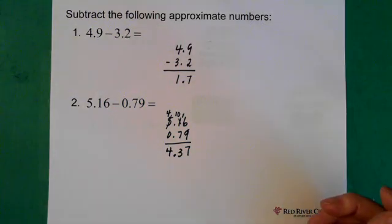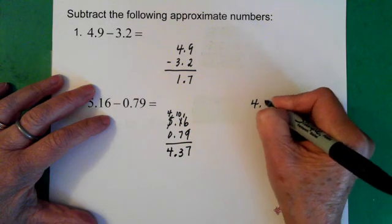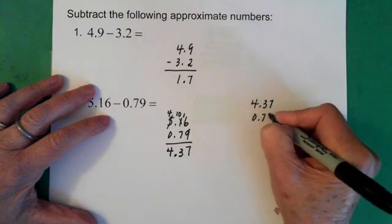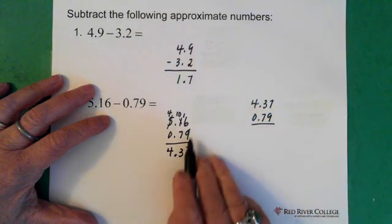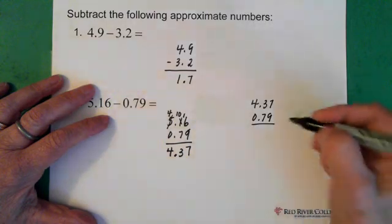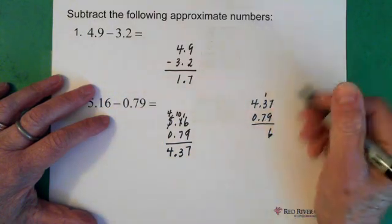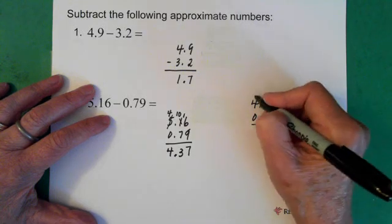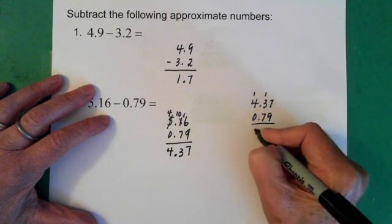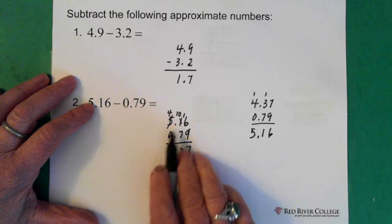And when you've done the question and if you're thinking, I don't know if that's right or not, you can always just do this: add it together. So the 4.37 plus that number and see if it ends up being 5.16. So 9 and 7 is 16, 6 carry the 1. There's 10, 11, 1 carry the 1. Our decimal is here. And 4 plus 1 is 5. So that takes us back to where we started. So then we're okay.